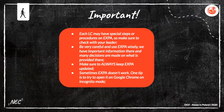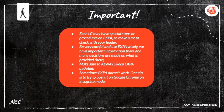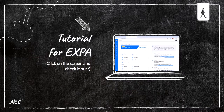These are some important points. Each LC may have special steps or procedures on Expa, so make sure to check with your leader. Be very careful and use Expa wisely. We have important information there and many decisions are made based on what is provided there. Make sure to always keep Expa updated. Sometimes Expa doesn't work — one tip is to try to open it in Google Chrome in incognito mode. This is a tutorial for Expa — check it out, click on the screen, and let's make this real.